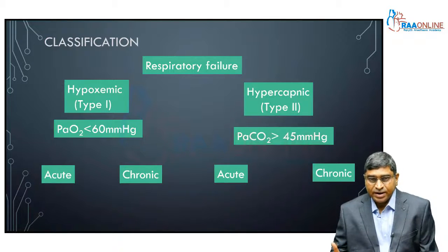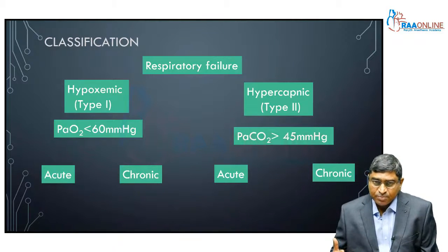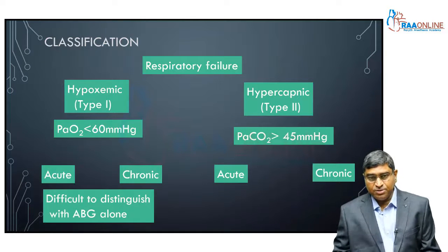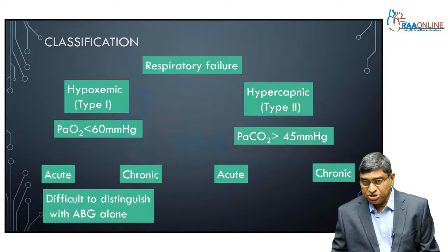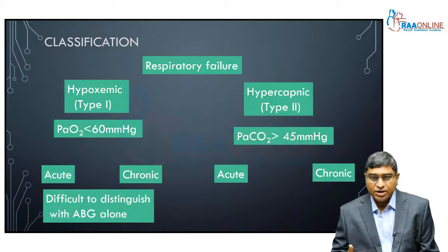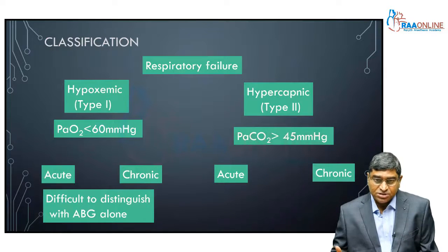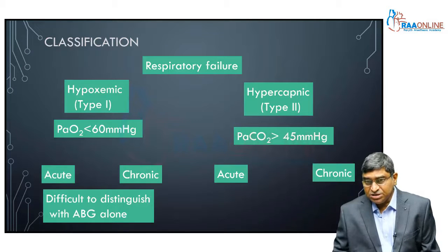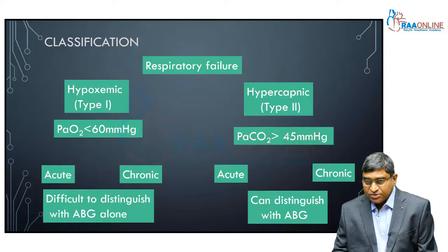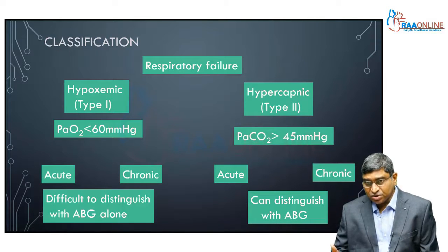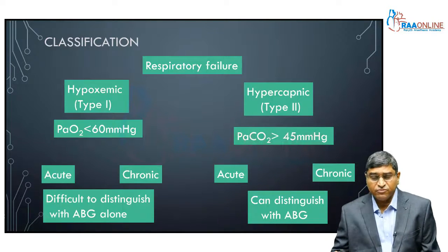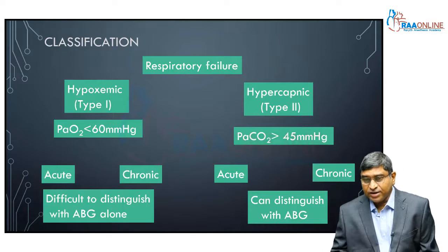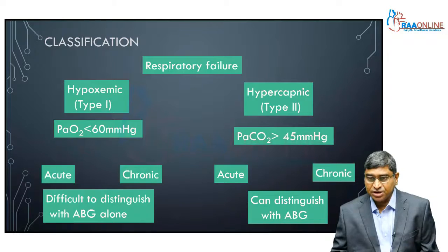In hypoxemic respiratory failure, it is difficult to differentiate between acute and chronic with an ABG alone — you need to look at clinical features. For example, chronic hypoxemic respiratory failure would present with polycythemia or clubbing. Hypercapnic respiratory failure, type 2, is easier to diagnose with an ABG. In a patient with chronic hypercapnia developed over a period of days, you would find renal compensation and the bicarbonate would be on the higher side.